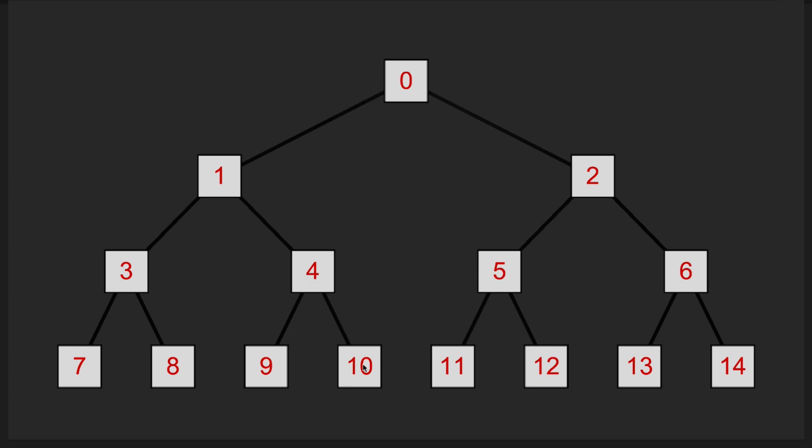There's a very simple mathematical way to do it. Given any node — say node 11 — we can find its parent node by subtracting 1 to give us 10, then dividing by 2 to give us 5. This also works for node 12: subtract 1 to get 11, divide by 2 gives 5.5, and integer division rounds that down to 5. So the formula for finding the parent of any node is (n - 1) / 2.